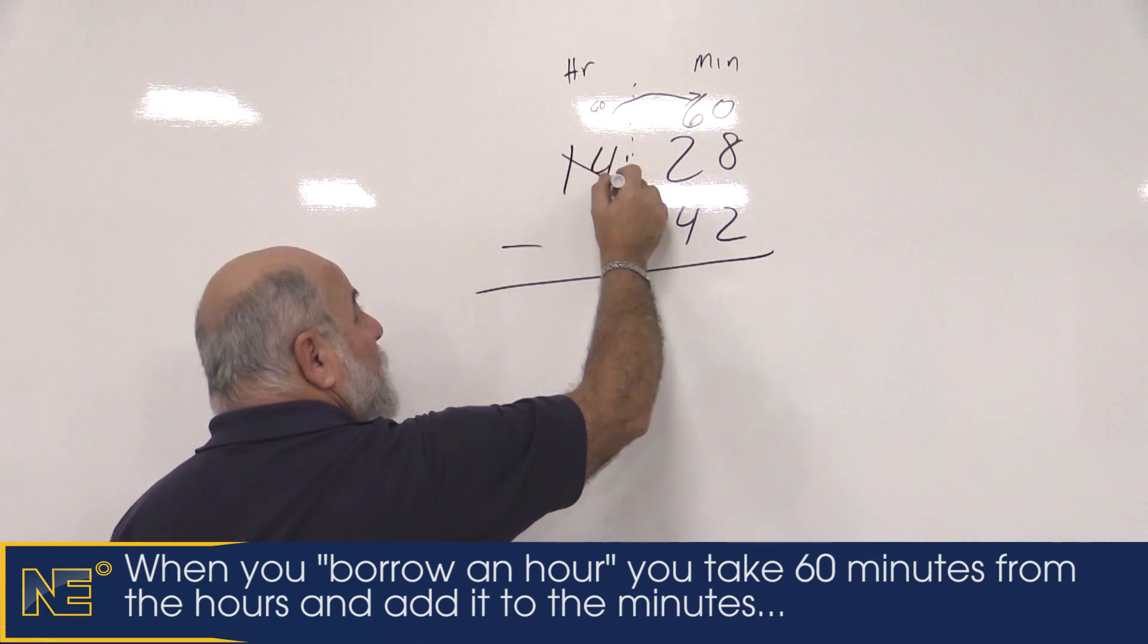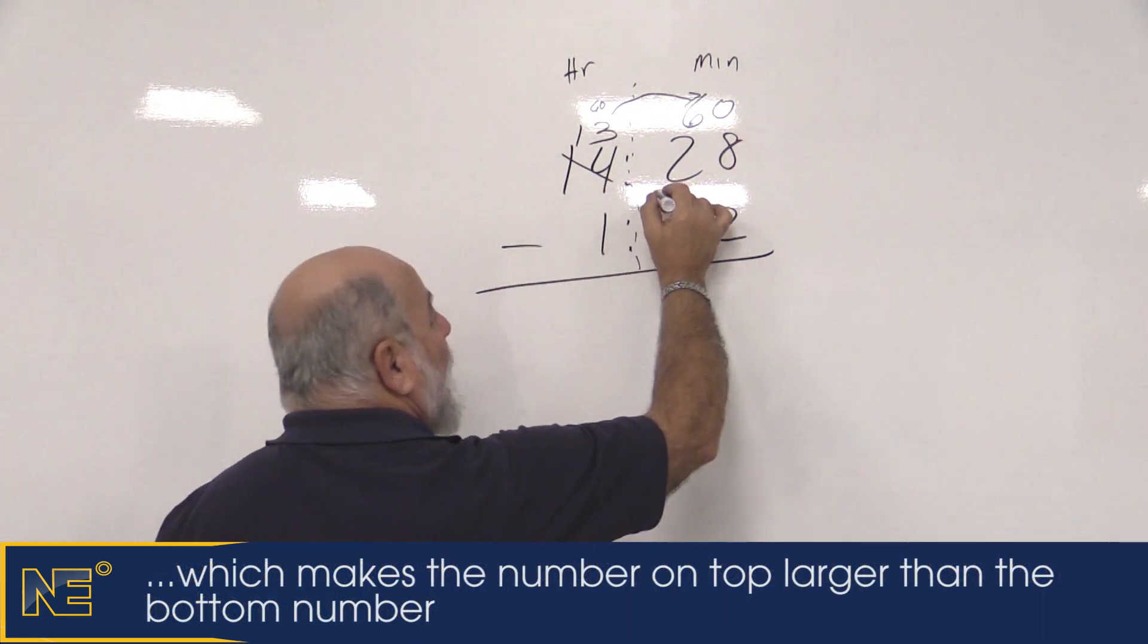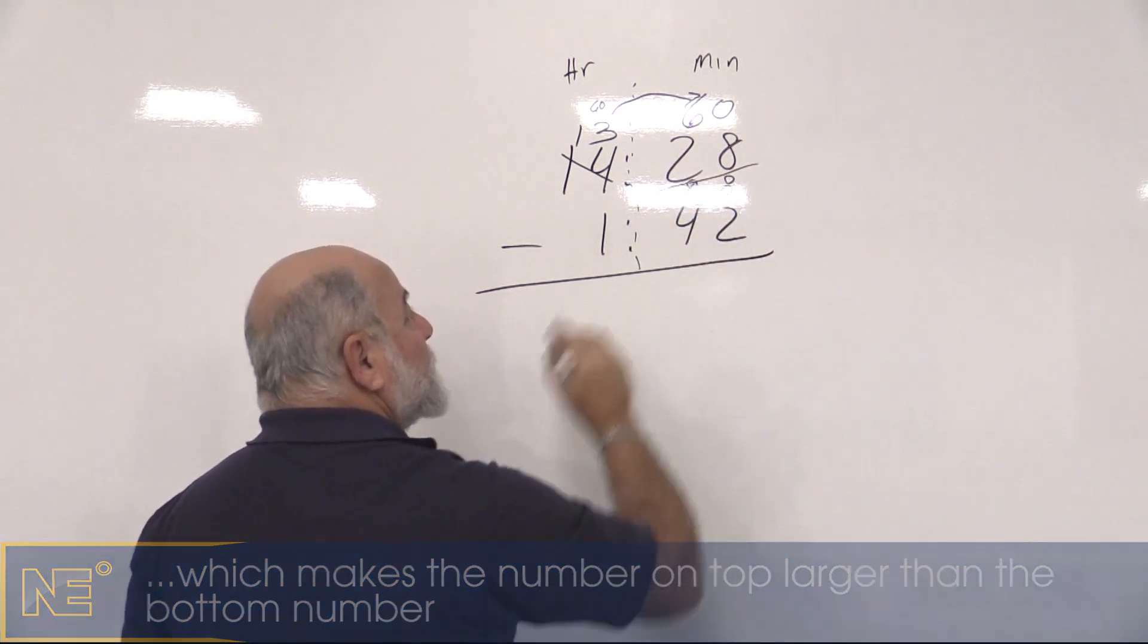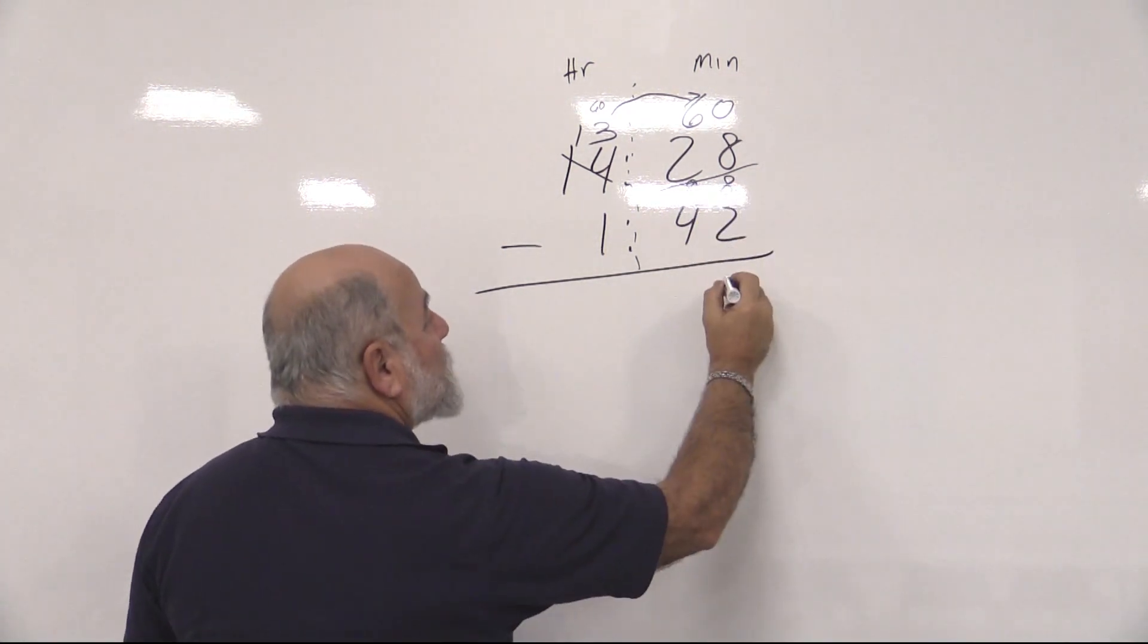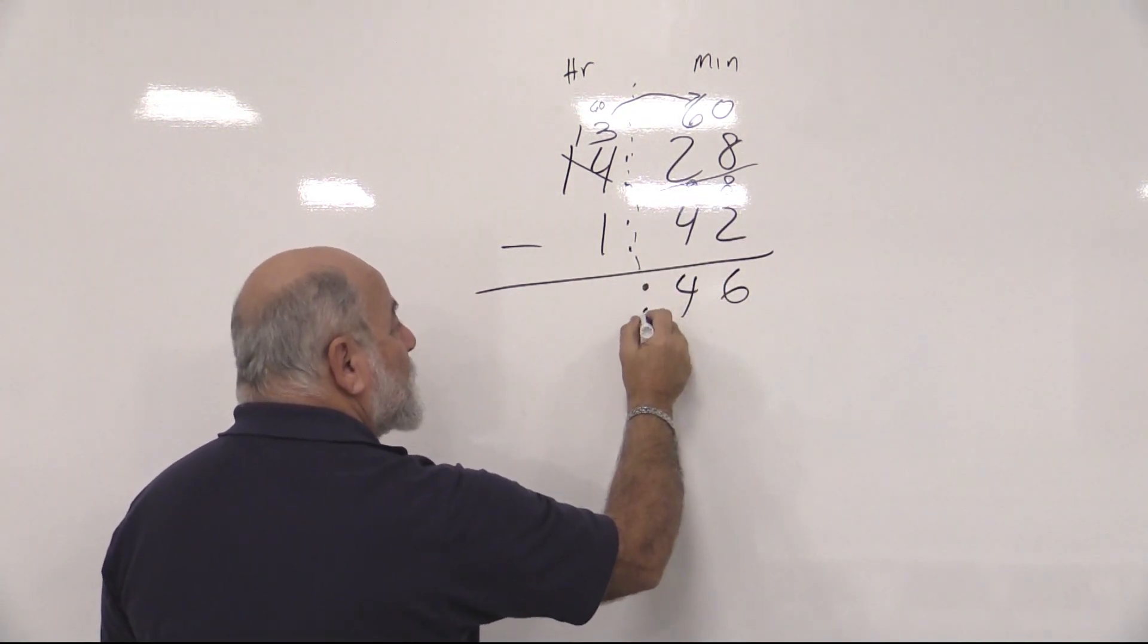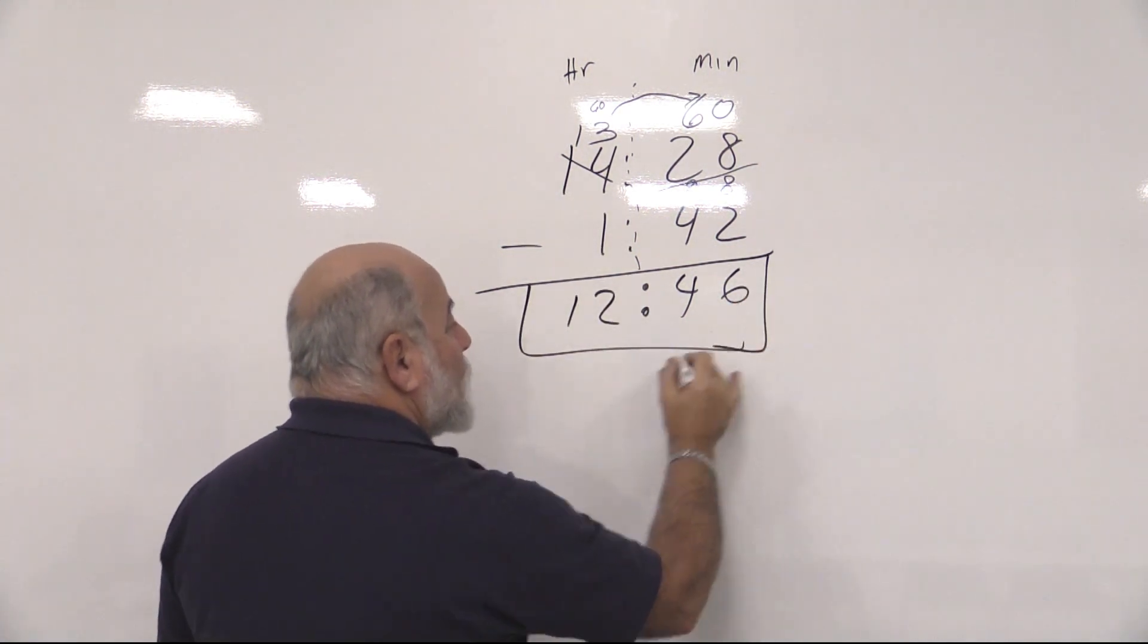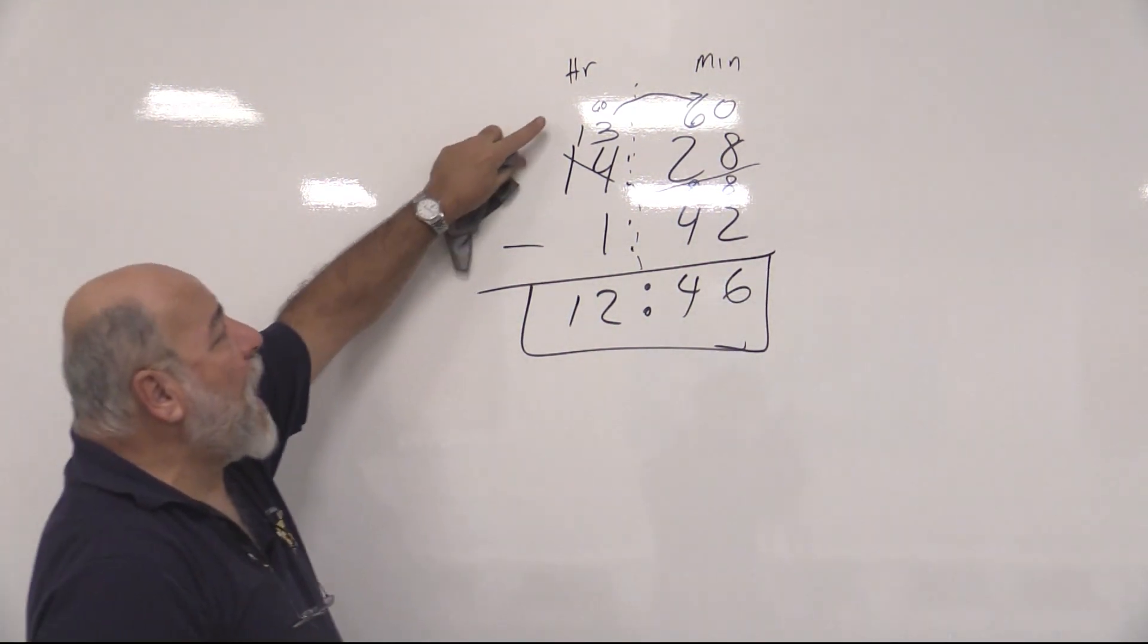We're going to reduce this 14 to 13 because we took an hour off of it. We're going to add our minutes: 6 and 2 is 8. Now we can do our math. 8 minus 2 is 6, 8 minus 4 is 4, and 13 minus 1 is 12. 12 hours and 46 minutes. Borrowing an hour, we have to bring 60 minutes over.